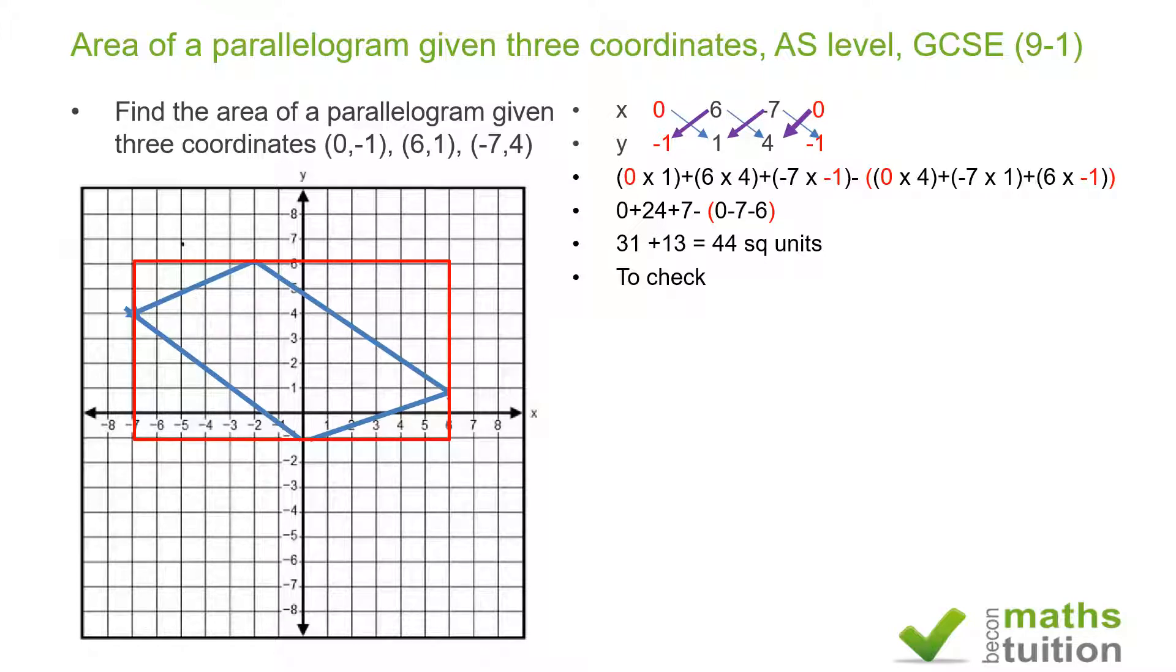Which is 13 times 7, and 13 times 7 is 91 square units. So the area of the red rectangle is 91 square units. Now I'm going to subtract from that the area of these triangles.